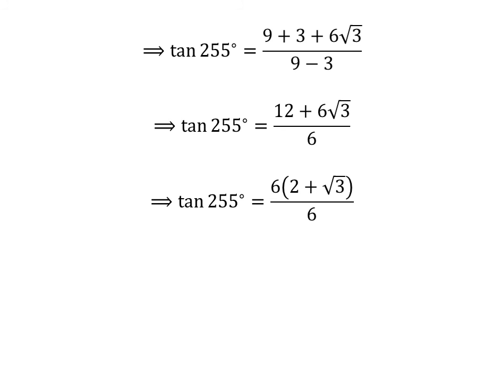Here, I have taken out the common factor 6 in the numerator. Canceling out the common factor 6 in the numerator and the denominator gives us: tangent of 255 degrees is equal to 2 plus square root of 3.